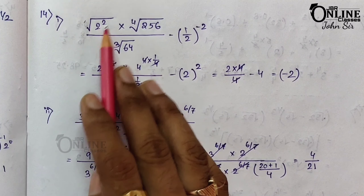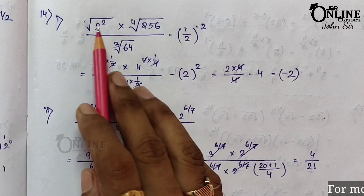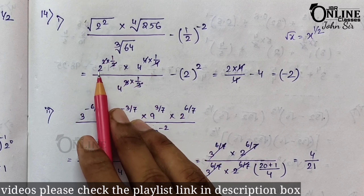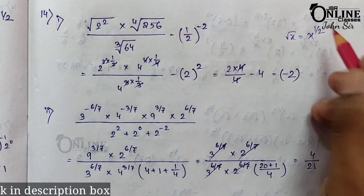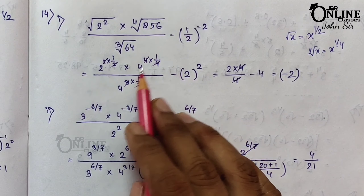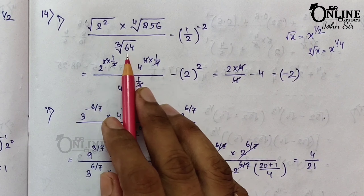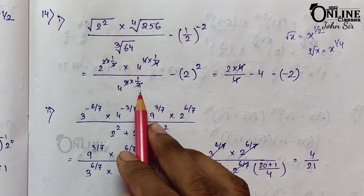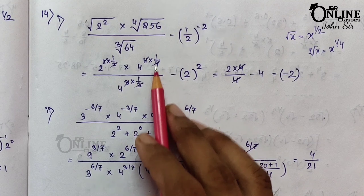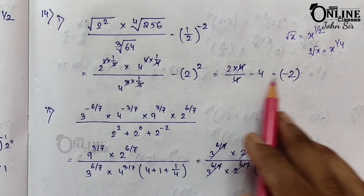Sum 14.1: ∜(√2)² × ⁴√256 / ∛64 − (1/2)^(−2). Root means x^(1/2), so (2^(1/2))^2 = 2^1; fourth root of 256: 256 = 4^4 so ⁴√256 = 4; ∛64: 64 = 4^3 so ∛64 = 4; (1/2)^(−2) = 2^2 = 4. Computing: 2 × 4/4 − 4 = 2 − 4 = −2.